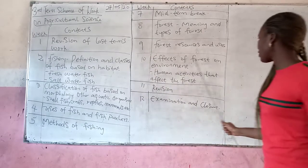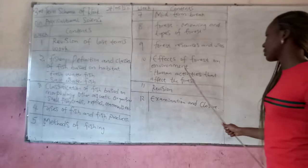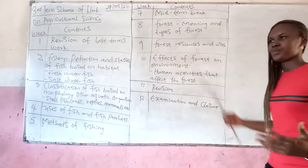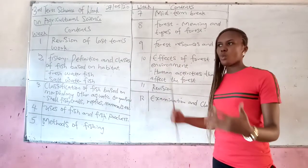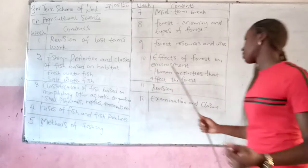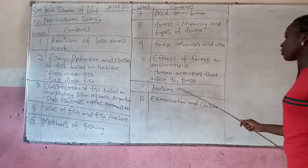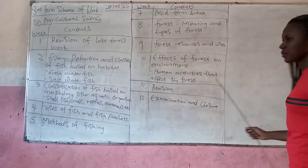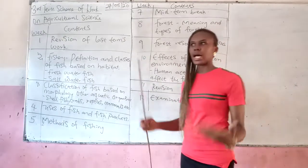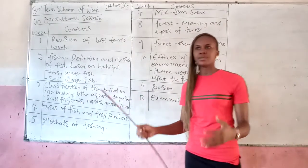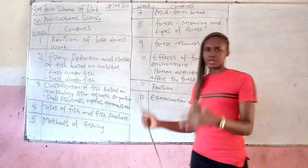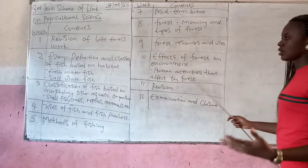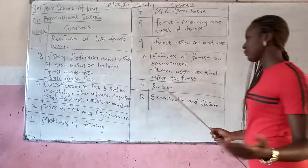Week 10 says the effects of forests on our environment — what benefit forests we try to put in place are to us. We also have human activities that affect the forest — things we do as individuals and how they affect us, such as bush burning, deforestation, and the rest of them. We will discuss how this affects us as human beings.